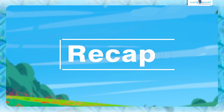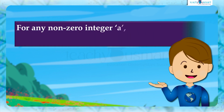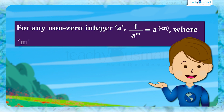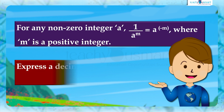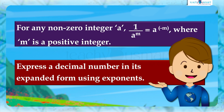Let's recall what we discussed today. For any non-zero integer a, 1 by a raised to m equals a raised to minus m, where m is a positive integer. We also learned about expressing a decimal number in its expanded form using exponents.